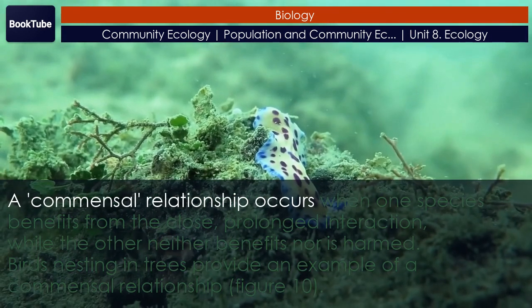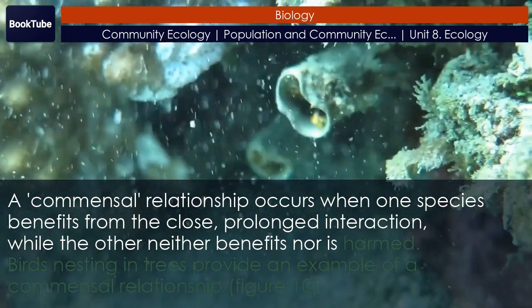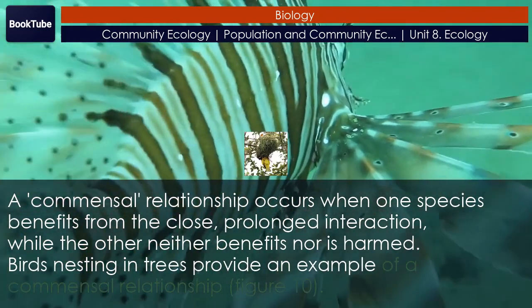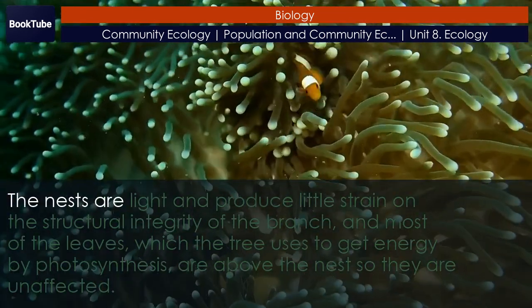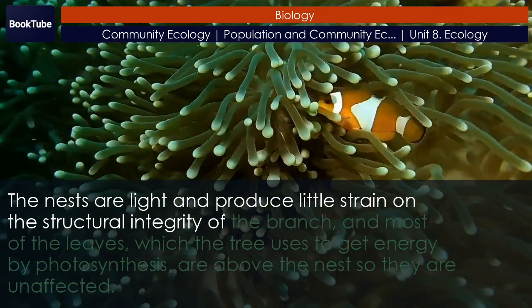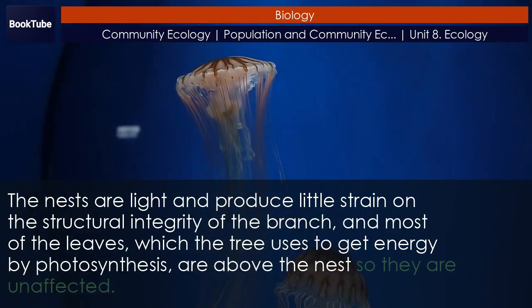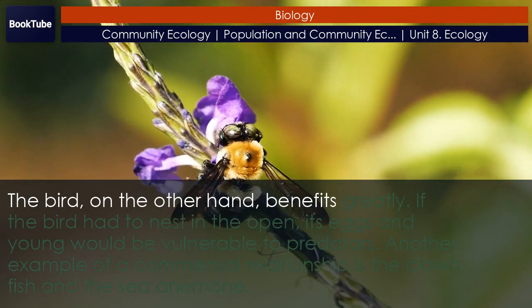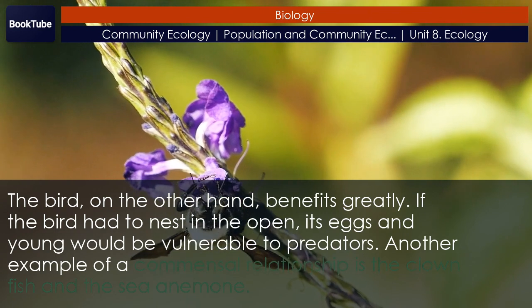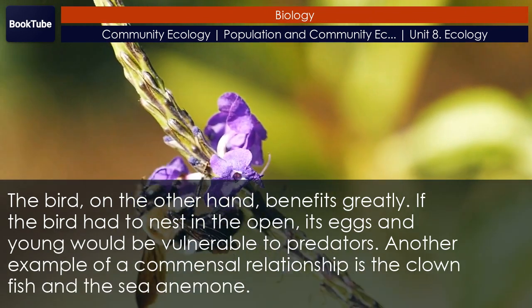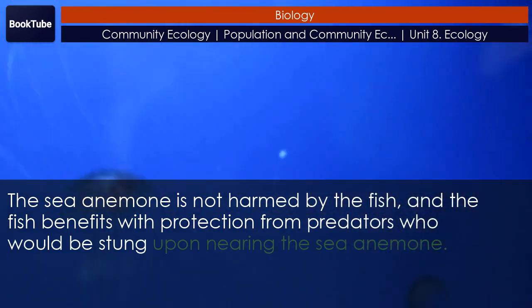Commensalism. A commensal relationship occurs when one species benefits from the close, prolonged interaction, while the other neither benefits nor is harmed. Birds nesting in trees provide an example: the tree is not harmed by the presence of the nest, as the nests are light and produce little strain, and most leaves used for photosynthesis are above the nest. The bird, on the other hand, benefits greatly, as its eggs and young are protected from predators. Another example is the clown fish and the sea anemone — the anemone is not harmed, and the fish gains protection from predators who would be stung by the anemone.